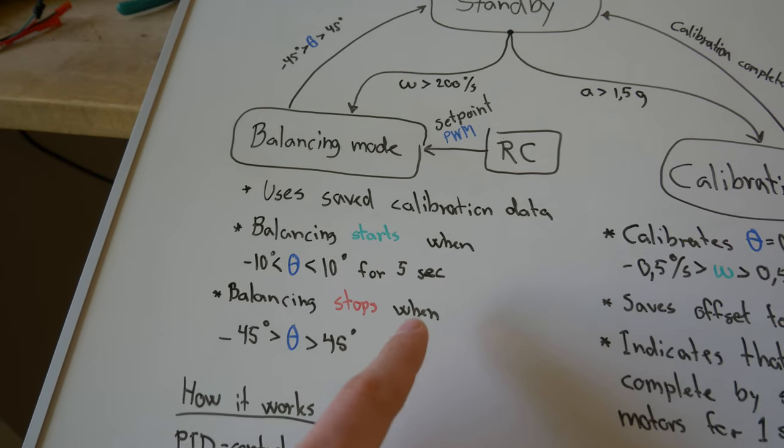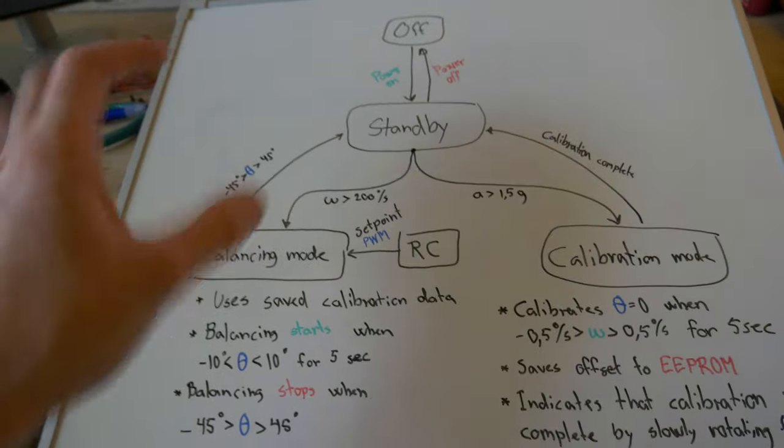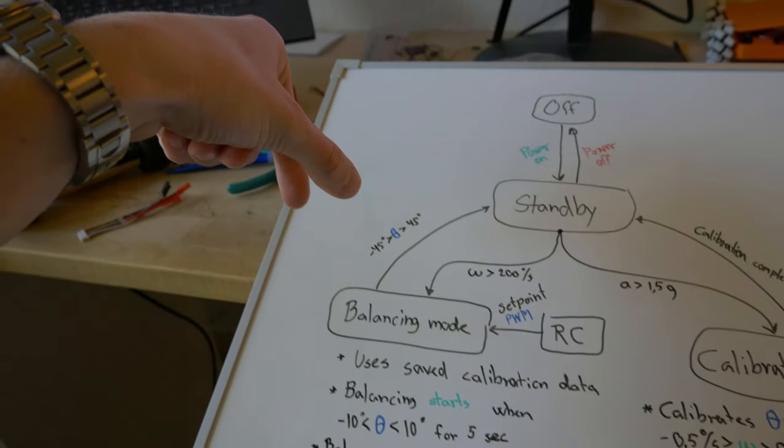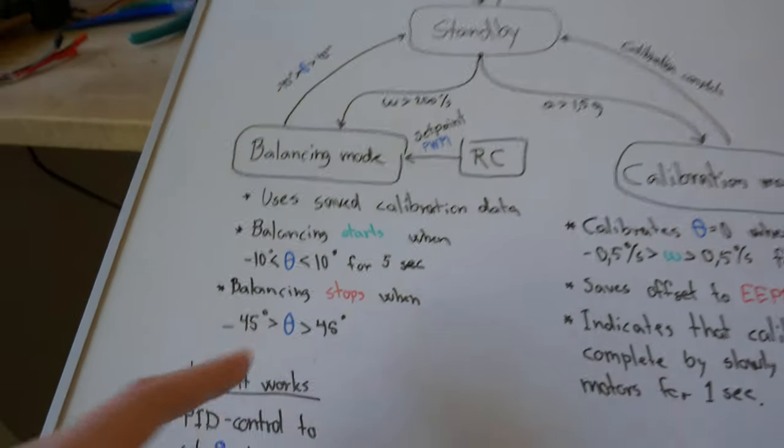It uses the saved calibration data to know which way is up or down. The balancing starts when the absolute angle has been between plus or minus 10 degrees for more than five seconds.